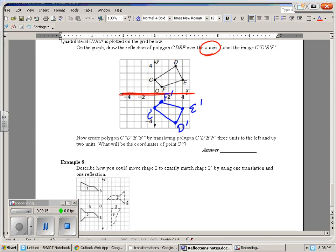Then it says, now create polygon CDEF double prime by translating polygon CDEF 3 units to the left and up 2 units. So now we're not reflecting, we're translating or sliding. So I go to the left 1, 2, 3 times. I go up twice, and C double prime is (-3, 0).